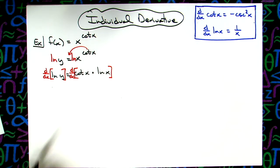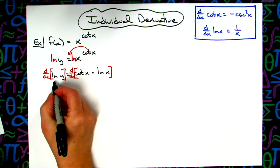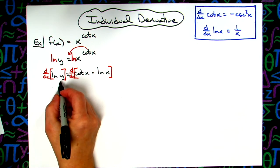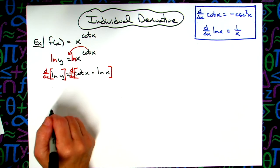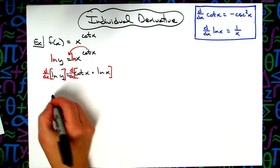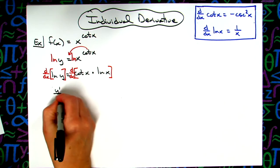Derivative of ln(x) is going to be 1/x, or in this case it's going to be y'/y because it's u'/u. So we'll have y'/y.